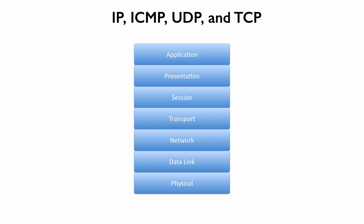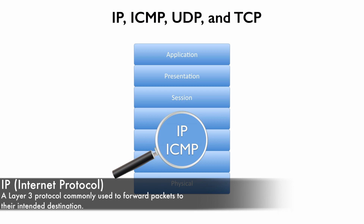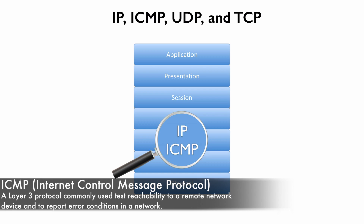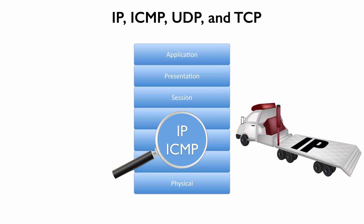If this were the DOD model, remember the network layer would instead be called the internet layer, but the transport layer would still be called the transport layer. Zooming in on the network layer, a couple of the popular protocols we find there are IP, internet protocol, and ICMP, internet control message protocol. Think of IP like a flatbed truck — it can carry upper layer protocols such as UDP, user datagram protocol, and TCP, transmission control protocol, both at layer 4. IP can encapsulate those protocols and send them across the network.